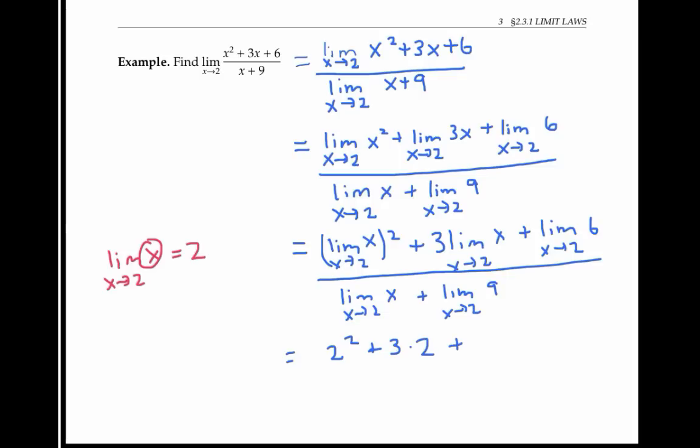Now notice that the limit as x goes to 2 of 6, well, 6 doesn't have any x's in it. So as x heads towards 2, 6 stays at 6, and the limit here is just 6. So in my original problem, I can replace the limit of 6 with 6, and on the denominator here I get 2 plus 9.